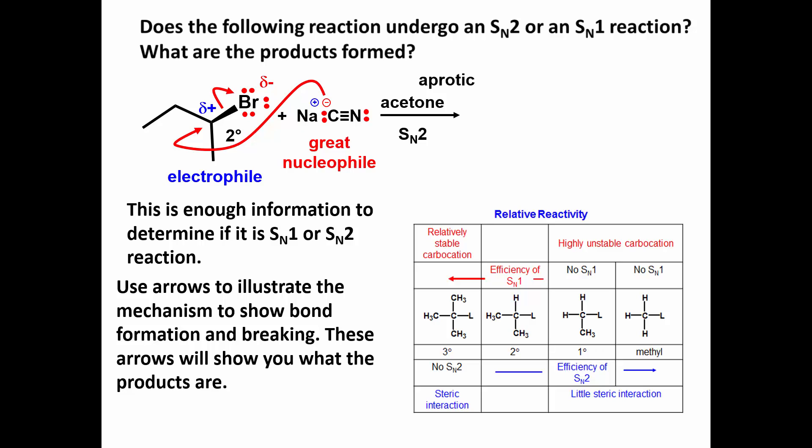Since there cannot be 10 electrons on the electrophilic carbon, the carbon-bromine bond must break. This is what the second arrow shows. It shows the movement of the electrons from the sigma bond to the bromine atom.